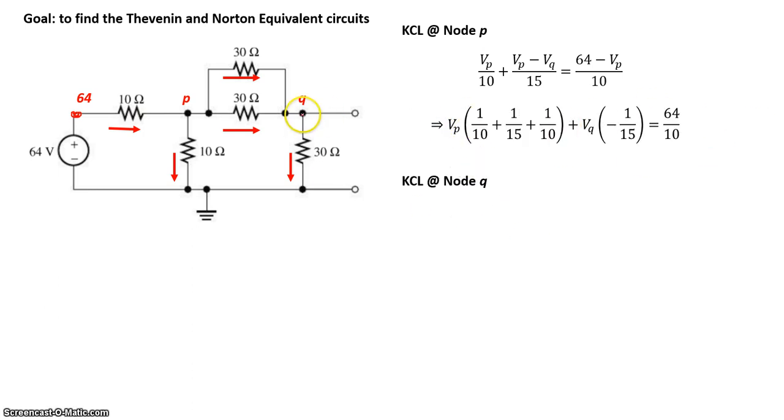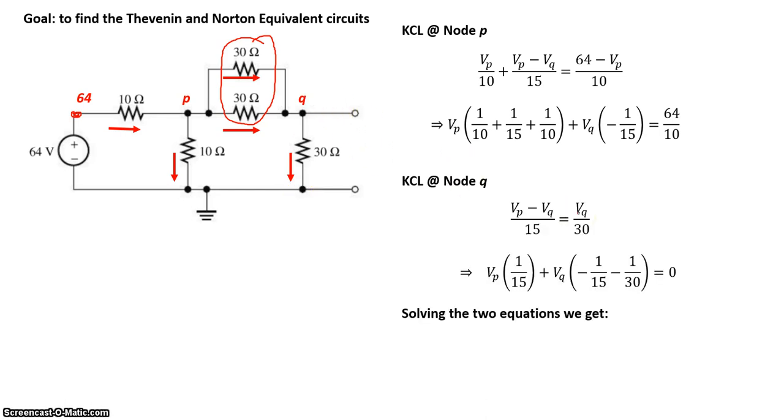Similarly, we can write KCL at node Q. Node Q, we have current coming from P towards Q through a combined resistance of 15 ohms. So VP minus VQ, current coming in, minus VQ divided by 15 is equal to VQ minus 0 divided by 30. Rearranging that, we get this. And if we use our favorite technique to solve the two equations, we get VP and VQ values.